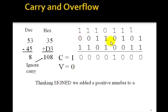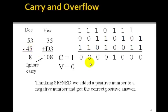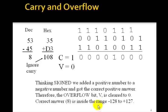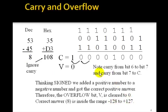Thinking signed, we added positive 53 to negative 45 and got the correct answer, 8. The overflow bit V is cleared to 0 because the correct answer, 8, is inside the range minus 128 to plus 127. Note that we got a carry from bit 6 to bit 7, and also a carry from bit 7 to the carry. Any time this condition holds, the overflow bit will always be set to 0.